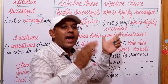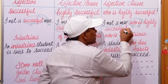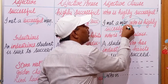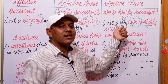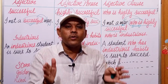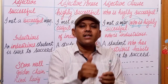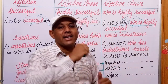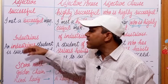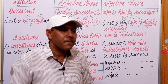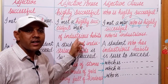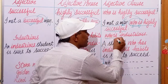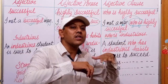This adjective clause 'who is highly successful' is qualifying 'man,' a noun in this sentence. If a group of words having a subject and finite verb of its own qualifies a noun, it acts as an adjective. Next example: 'industrious.' Industrious means hardworking. Change it into a phrase — 'of industrious habits.' Change it into a clause — 'who is industrious' or 'who has industrious habits.'